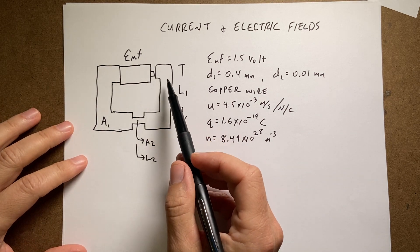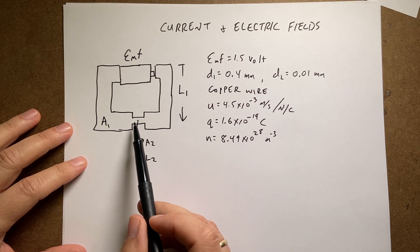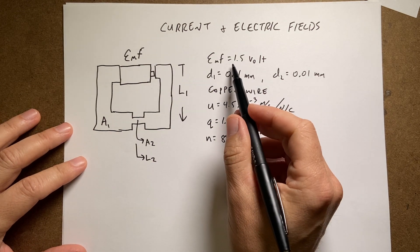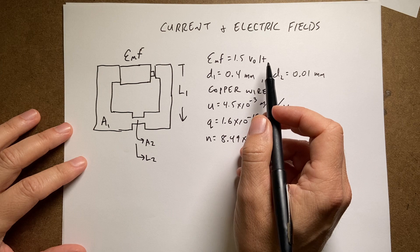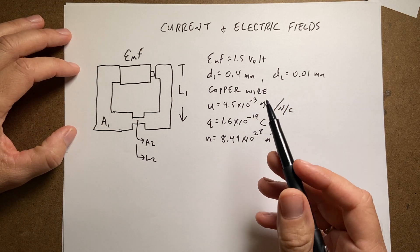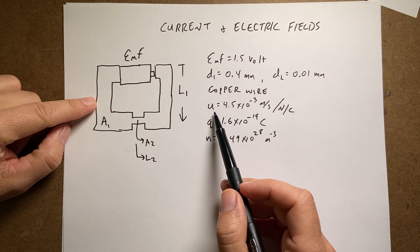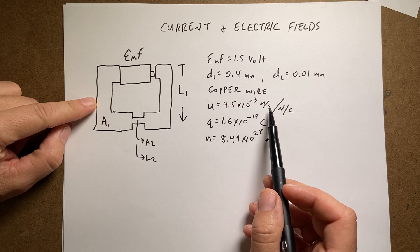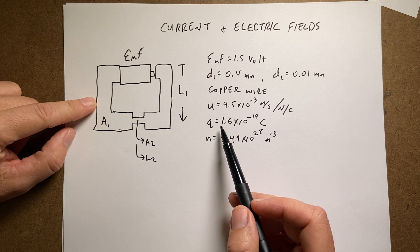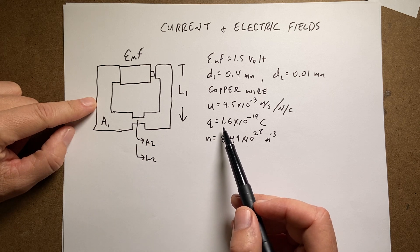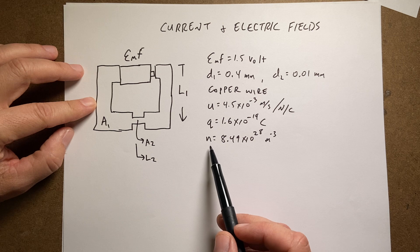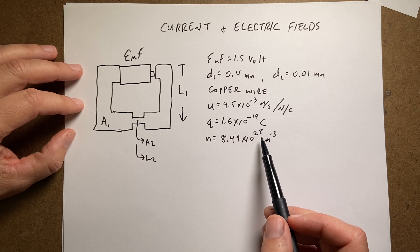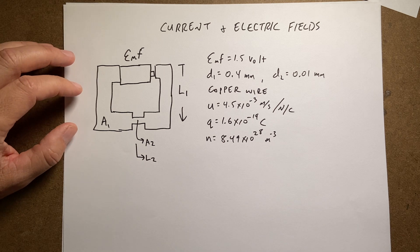This is a simple circuit where I have a thick wire connected to a super thin wire, hooked up to a D-cell battery with an EMF of 1.5 volts. It's copper wire, so copper has an electron mobility of 4.5 times 10 to the negative third meters per second per newtons per coulomb. The electron charge carrier is an electron, so it's 1.6 times 10 to the negative 19th coulombs. And the charge carrier density is 8.49 times 10 to the 28th charges per cubic meter.